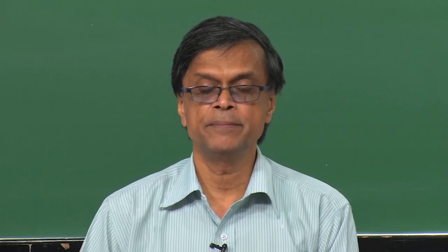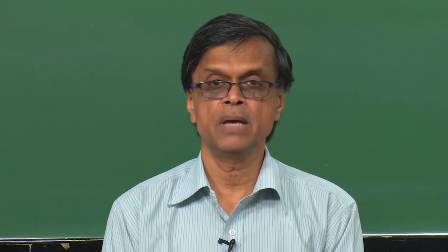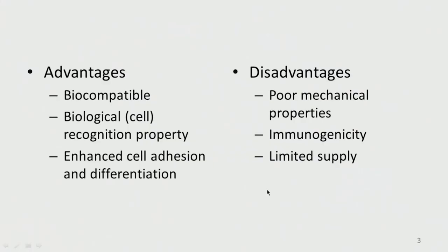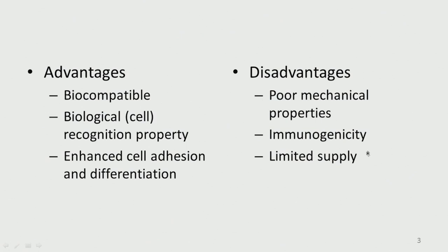So all these are called natural polymers and they have many advantages. They are biocompatible and have biological recognition properties — cells are able to recognize them as compatible material. So generally cell adhesion and differentiation is excellent when compared to synthetic polymers. But they also have disadvantages: poor mechanical properties, immunogenic issues, potential contamination and toxicity, and limited supply. We cannot produce them in large quantities like polyethylene or polymethylmethacrylate in an industry.